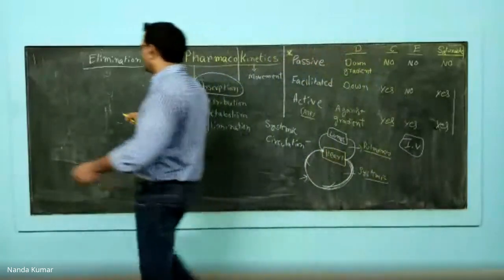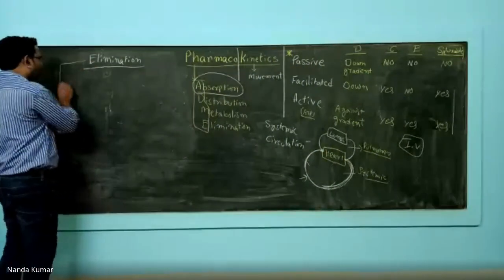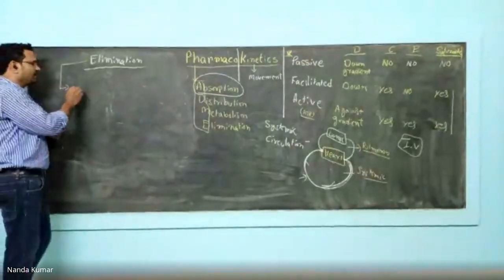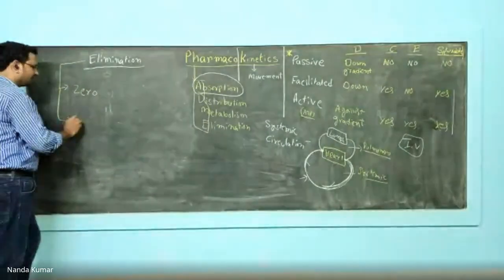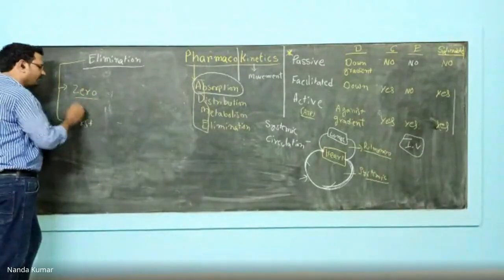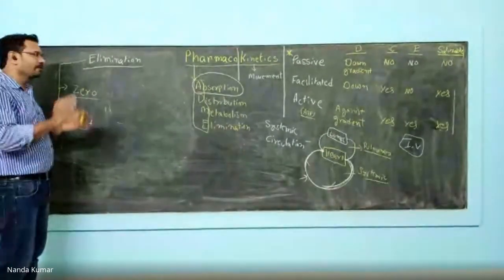When you see elimination, you have two different major pathways. The way drugs are getting eliminated could be zero-order kinetics or it could be first-order kinetics. Let us understand what you mean by zero-order and first-order.